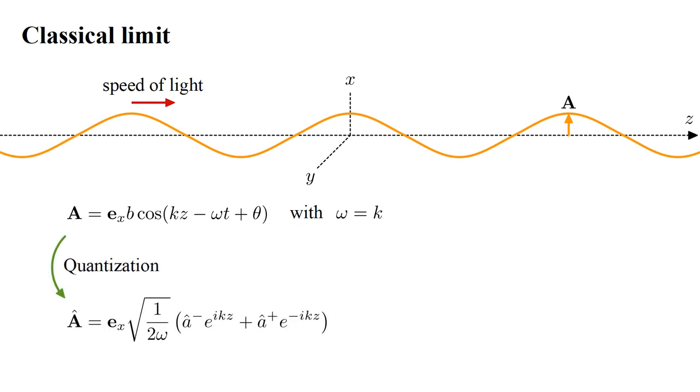After quantization, the electromagnetic field becomes an operator, a linear combination of the destruction and creation operators A hat minus and A hat plus. Let's try to work backward and see if we can use our formalism to find the quantum state that corresponds to the classical wave.